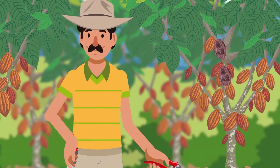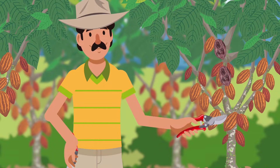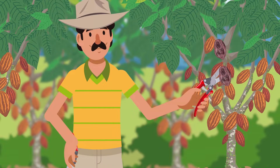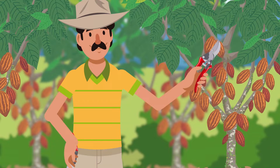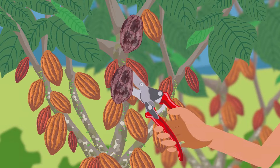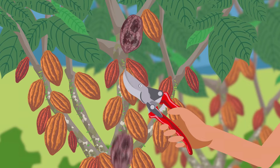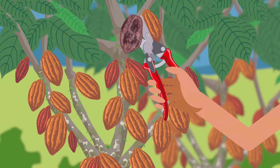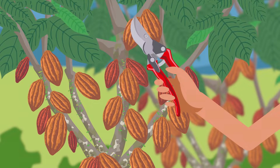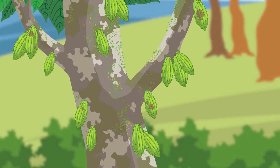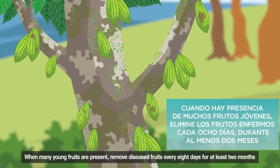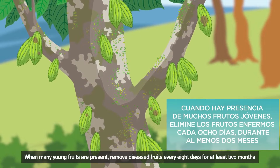It's time to start the phytosanitary pruning, which consists in the elimination of all the diseased fruits and diseased branches of the cacao trees in any stage of development of the damage. Diseased fruits are cut with scissors, left on the ground, and can be covered with leaf litter to prevent the disease from spreading. When we have the presence of many young fruits on our trees, we must remove the diseased fruit every eight days for at least two months.